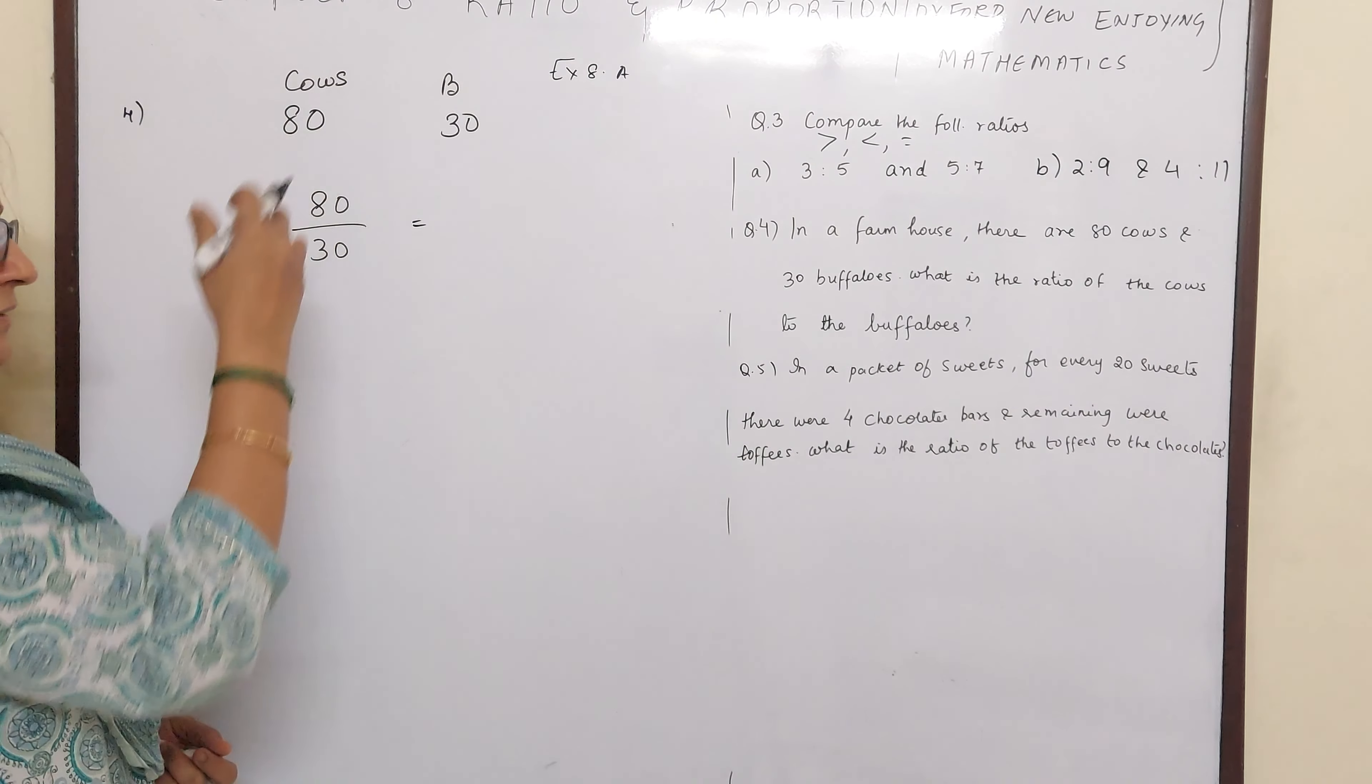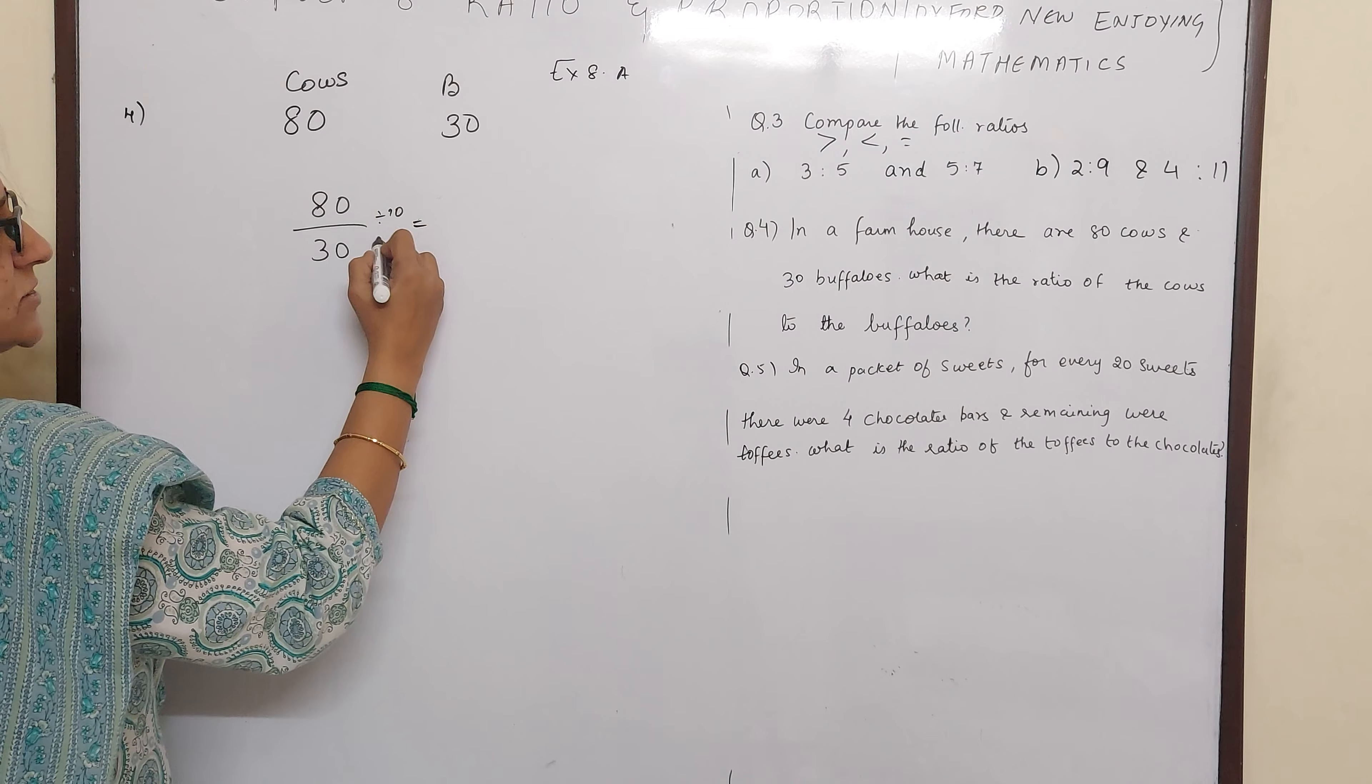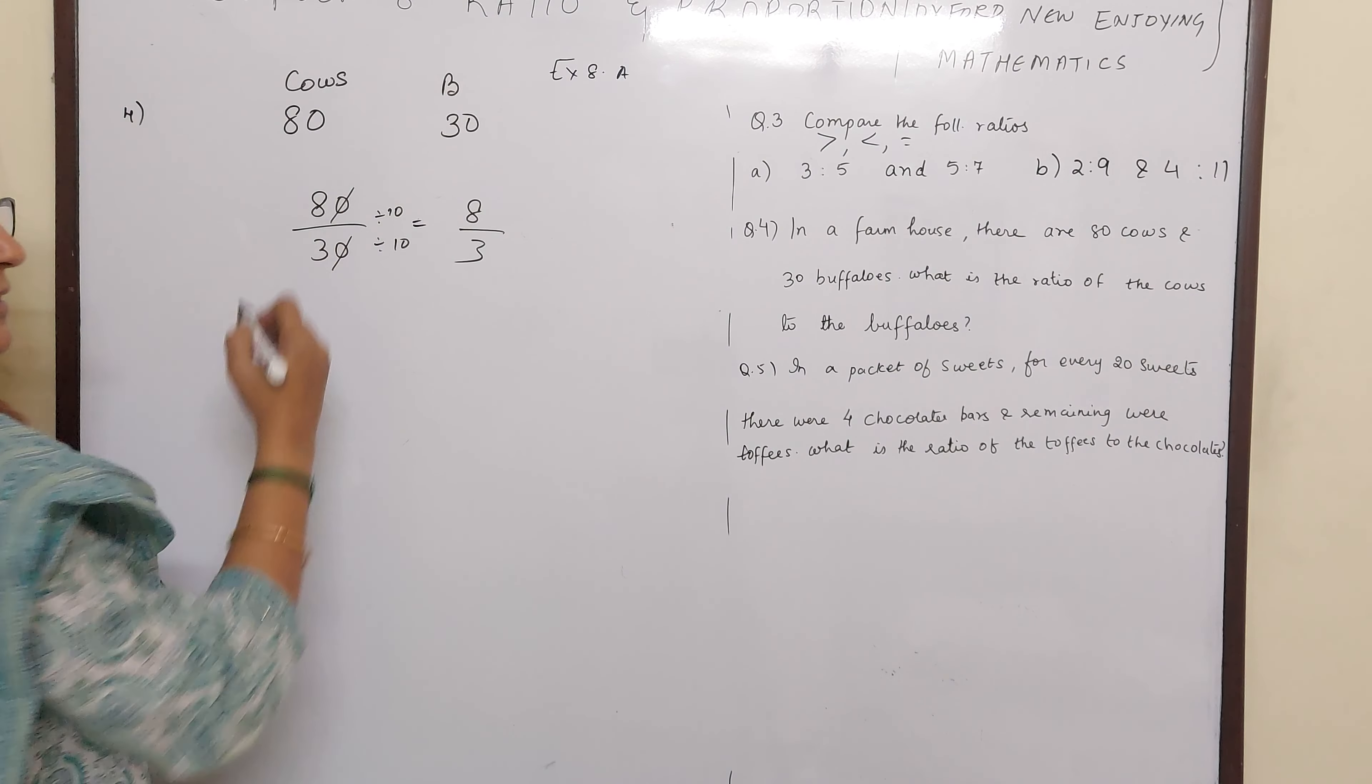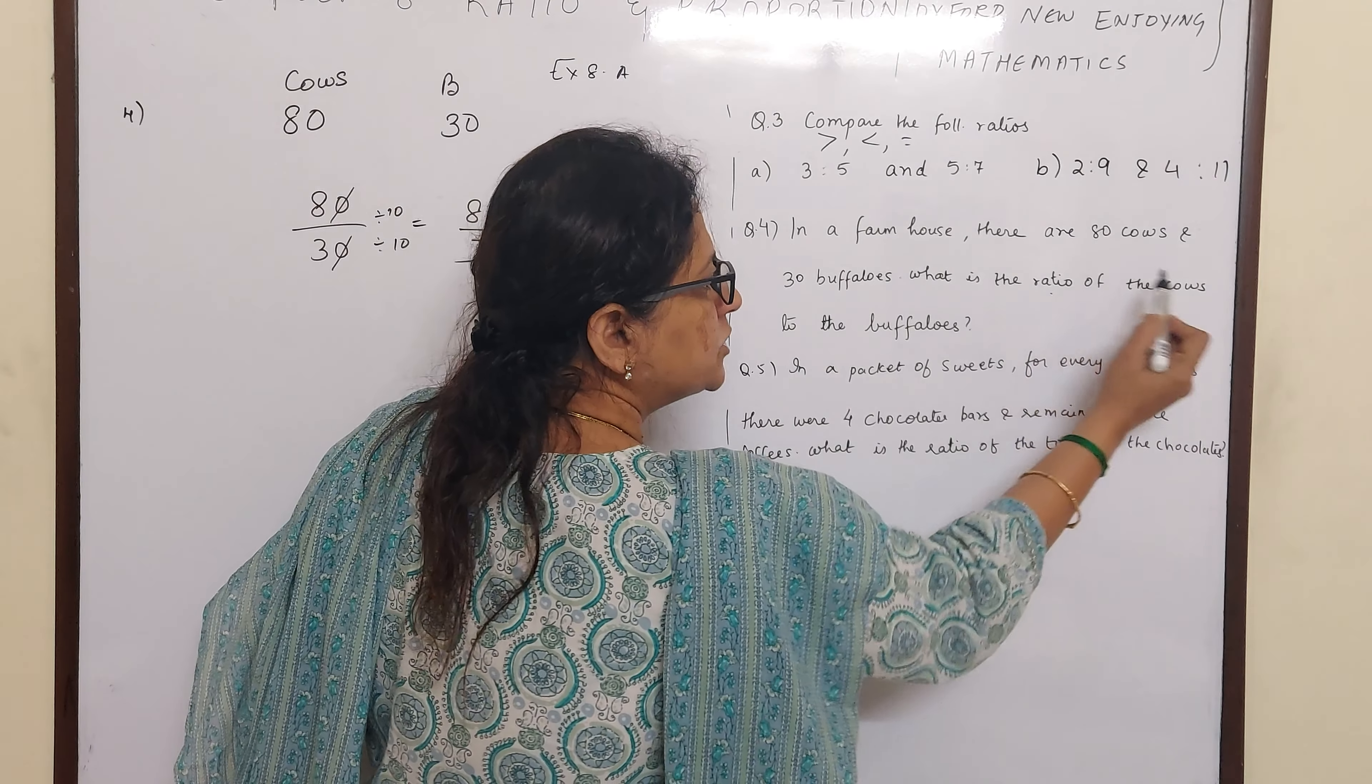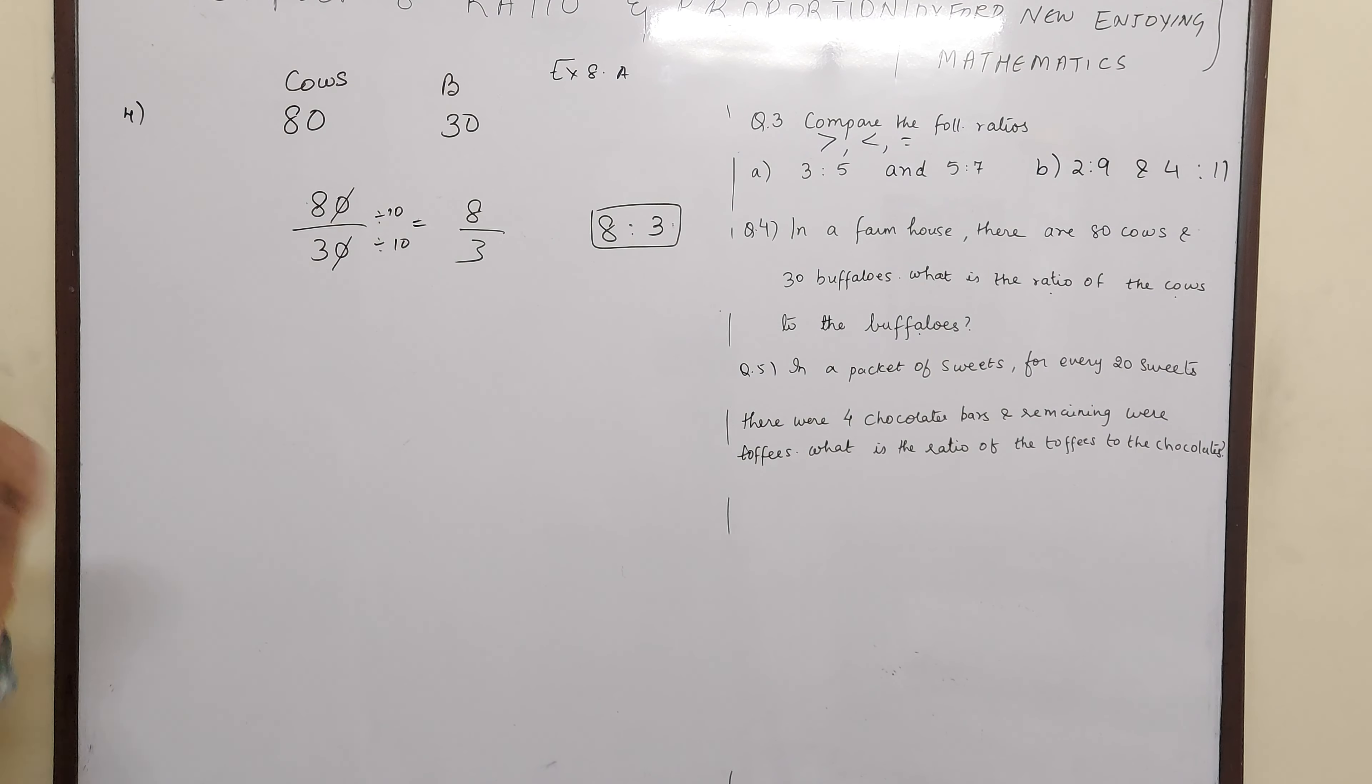So 80 cows by 30. We have learnt in our previous class that ratio means comparing quantities by division. And 1 zero on top and 1 zero down will get cancelled. I taught you in previous class that if there is a zero on top and zero down, that means you can straight away divide by 10. So instead of showing this you can just cancel. 10 eights are 80. 10 threes are 30. That's why 1 zero in the numerator, 1 zero in the denominator gets cancelled. And one more thing. The order is very important. So here the first is ratio of cows to buffalos. So cows only should come first and buffalos ratio should come next.